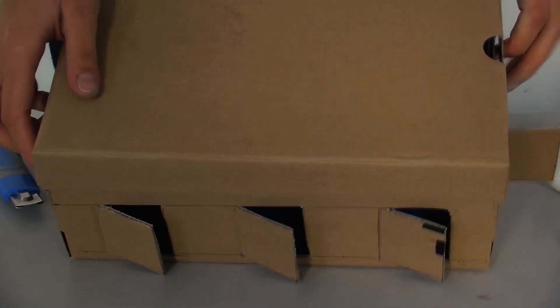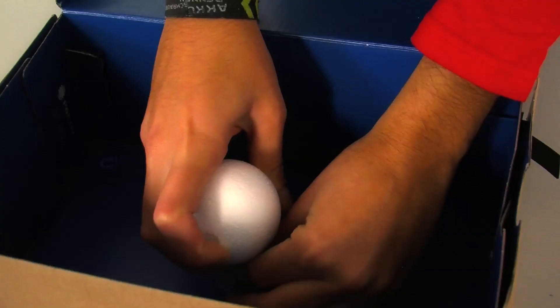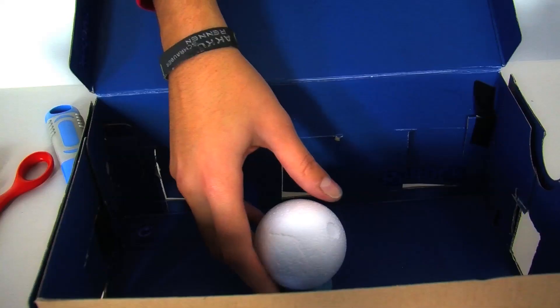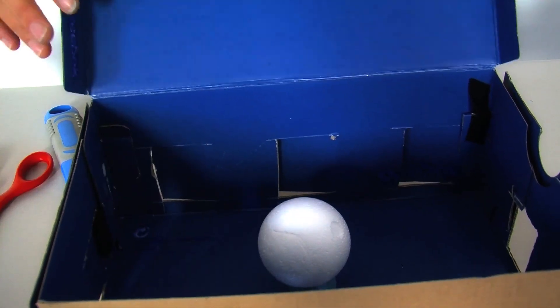Take the ball and poke it on the toothpick. The ball will be your moon in the middle of the box.